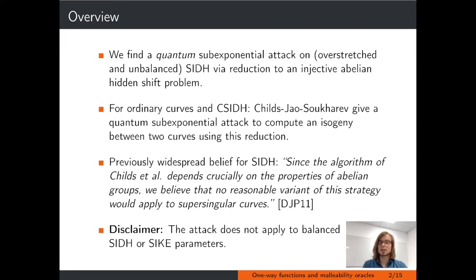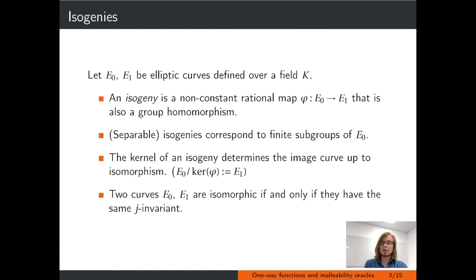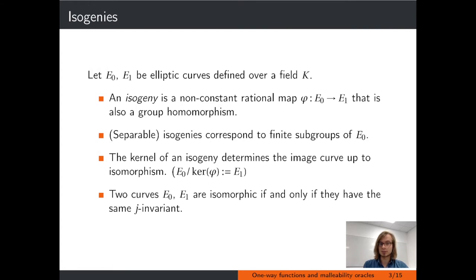Let's start with a quick recap of what isogenies are. Let E0 and E1 be elliptic curves defined over a field K. In cryptography, we are usually interested in those curves being defined over a finite field. An isogeny is a non-constant rational map between two curves that fixes the identity, or equivalently is also a group homomorphism. Recall that elliptic curves have a group structure, so this implies that the kernel of an isogeny is a subgroup of E0.